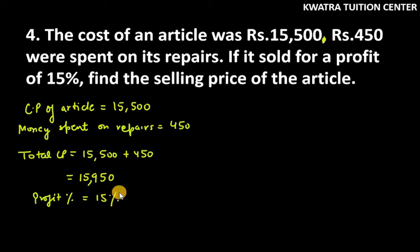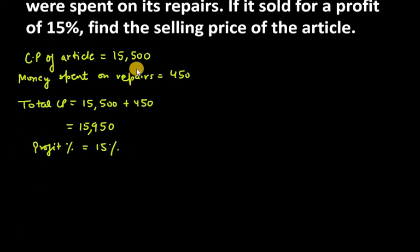Now we have to find the selling price of the article. First, you have to use the profit percent formula: Profit % = (Profit/CP) × 100.